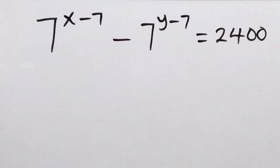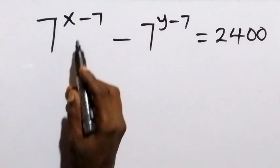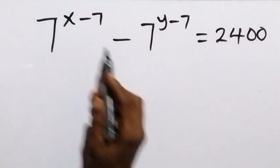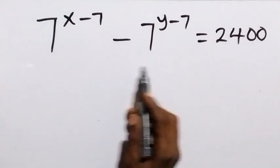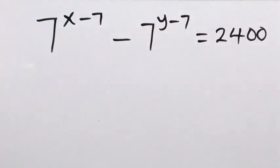Hello, you are welcome. How to solve this problem: 7 raised to power x minus 7, minus 7 raised to power y minus 7, equals to 2400.